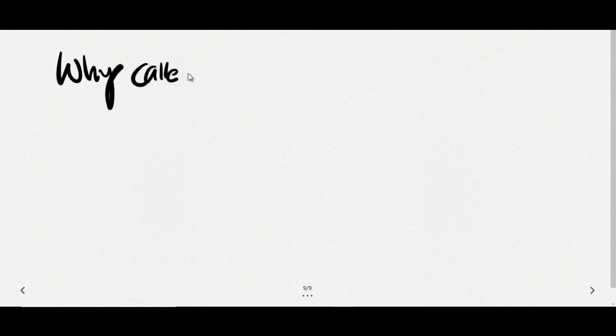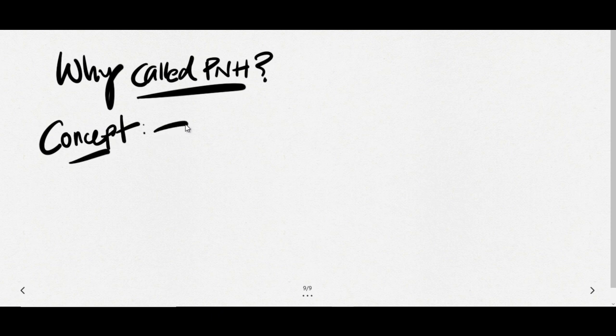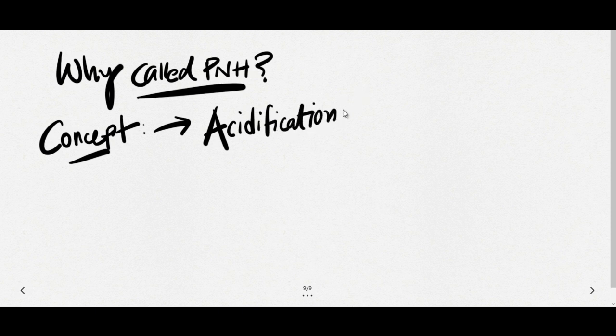Now why it is called PNH or paroxysmal nocturnal hemoglobinuria? Before that we have to understand the concept. The concept is that whenever there is an acidic pH or acidification that will lead to complement activity enhancement against RBC. So acidification will increase or enhance the activity of complement.